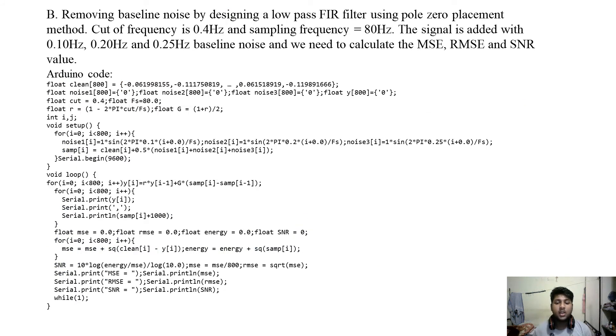In the second code we need to add three noise frequencies and then we need to remove it using the same procedure by passing it through a low pass filter. In this case we are keeping the noise amplitude same as 1, 1, 1 and similarly we are adding the noise and then we will find the SNR value, mean squared error value and the root mean squared error value.